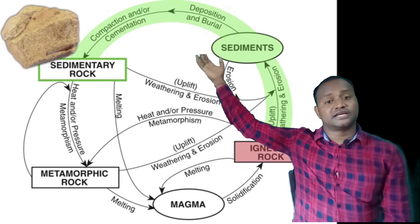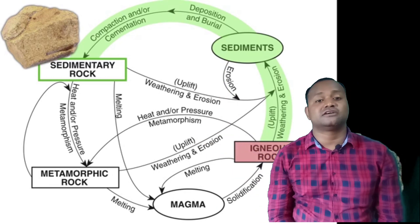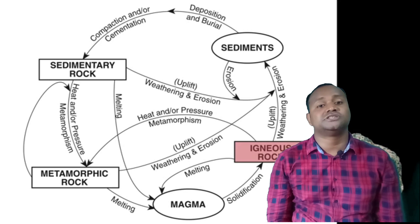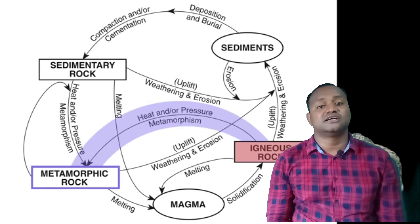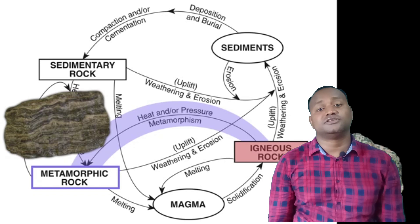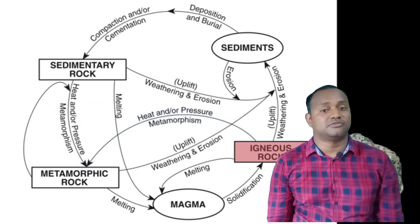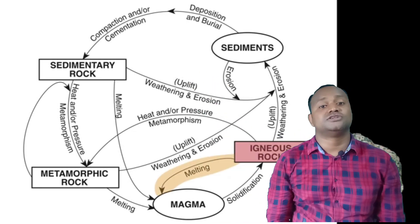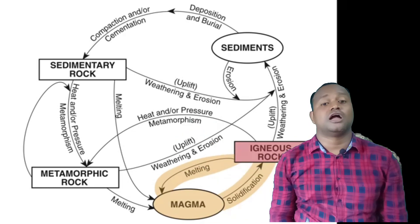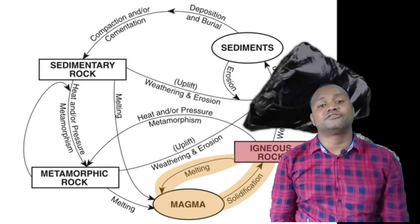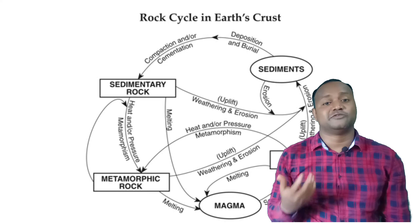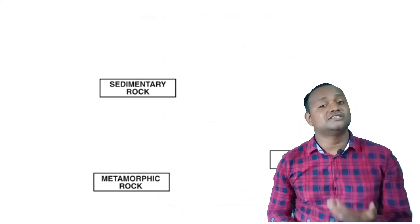The agents of erosion carry the weathered material of igneous and metamorphic rocks, and this material gets deposited by forming layers and beds. Due to pressure and temperature these layers are converted into sedimentary rocks. These sedimentary rocks, due to further temperature and pressure, are converted into metamorphic rocks. Igneous rocks also, due to increase in temperature and pressure, are converted into metamorphic rocks.